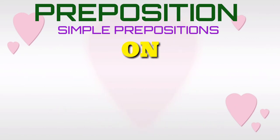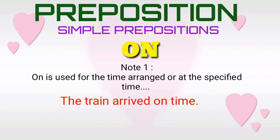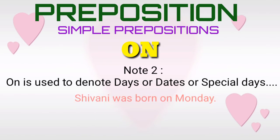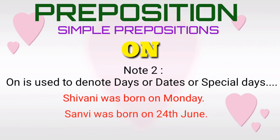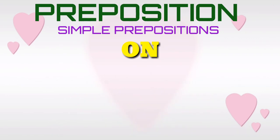Simple preposition 'on', note one. The simple preposition 'on' is used for the time arranged or at the specified time. For example: 'The train arrived on time.' Note two. The simple preposition 'on' is used for days, dates, or special days. For example: 'Shivani was born on Monday.' 'Sanvi was born on 24th June.' 'She presented me a gift on my birthday.'